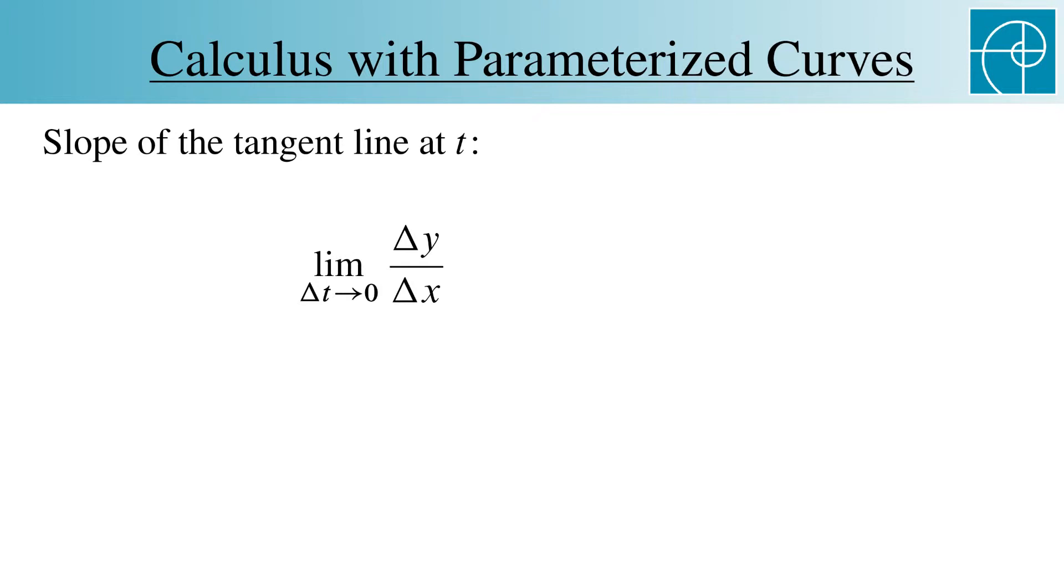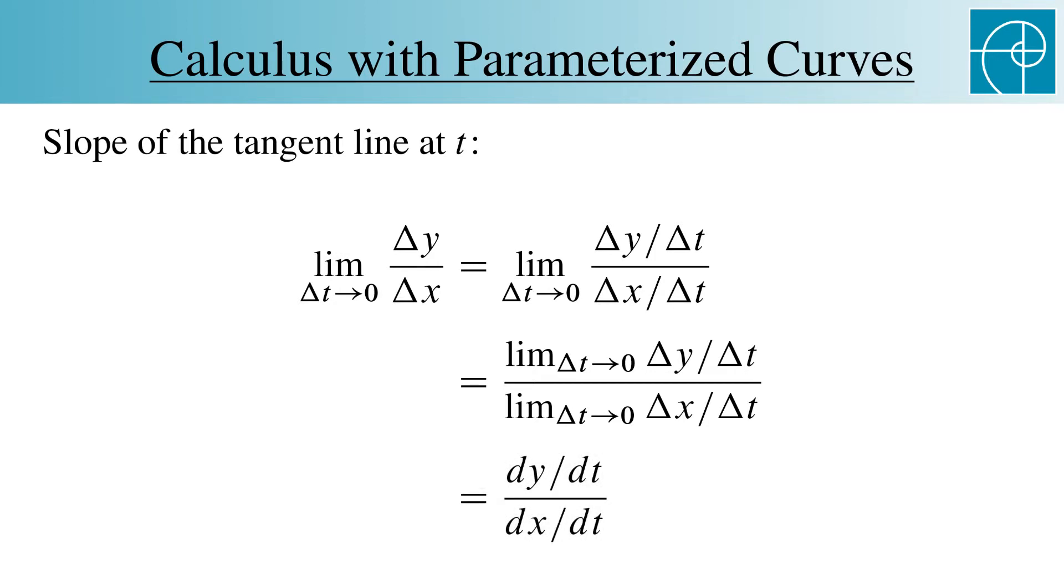Note that delta t is hidden in delta y and delta x, because both depend on t. We can divide both the top and the bottom by delta t, and then apply the limit law for quotients to get this. But this is just dy dt over dx dt. In other words, the slope of the tangent line is the ratio of the derivatives of the components defining the parameterization of the curve.